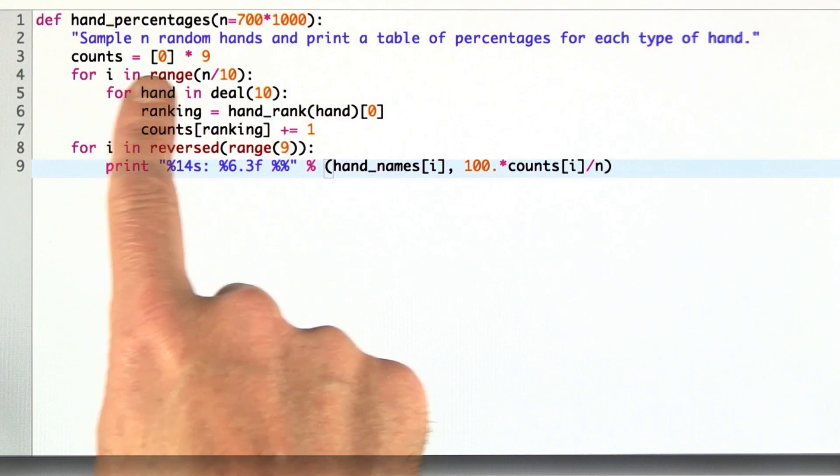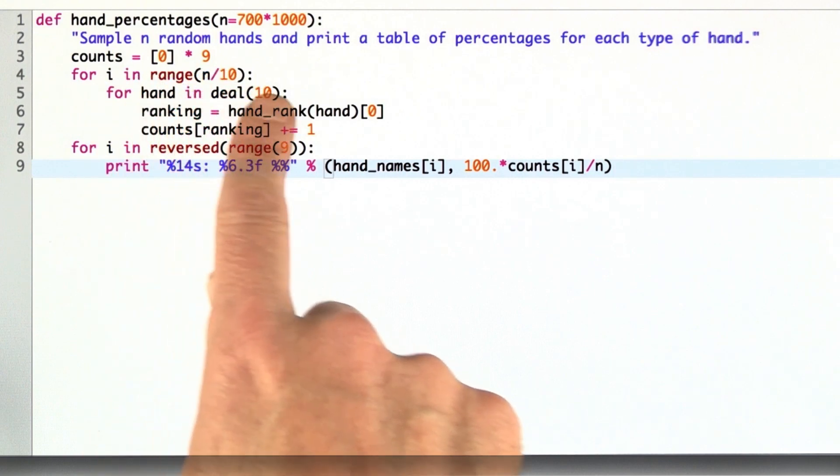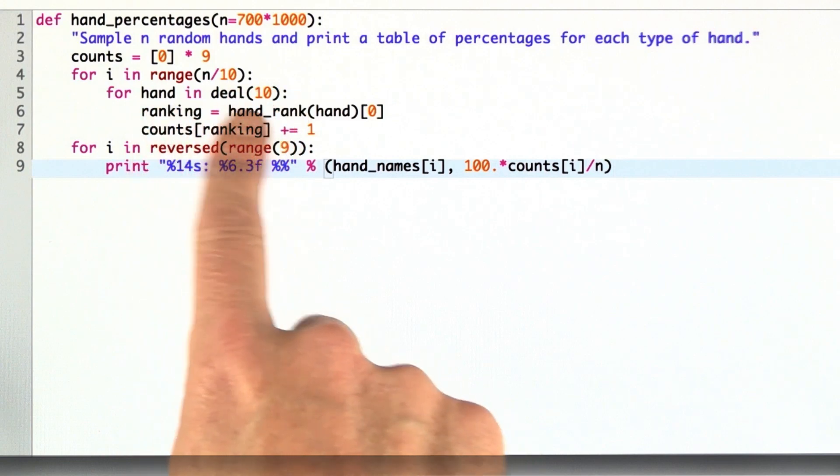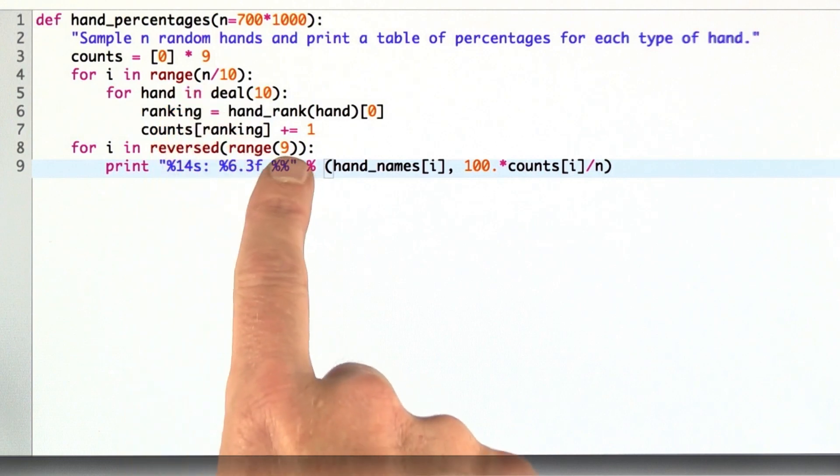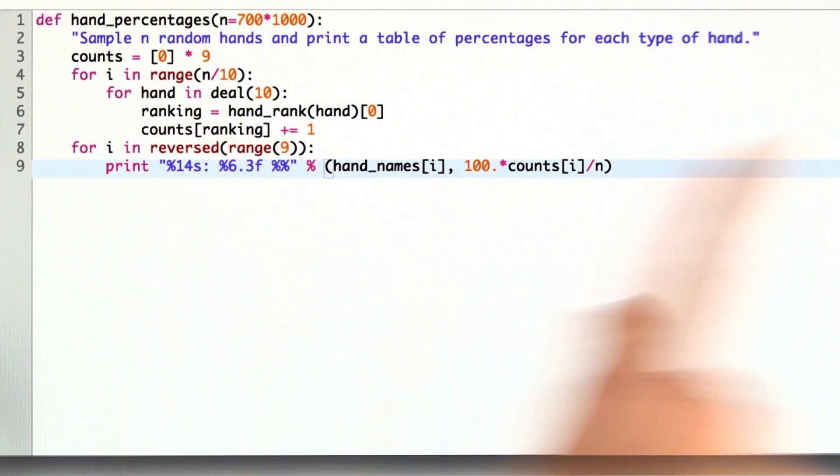We make up a vector of counts, which starts with no count for each of the nine possibilities, and then we go through the deals. What I'm going to do is deal 10 hands n over 10 times, and for each of those hands, I compute the ranking and then increment the count for the ranking, and then I just print out the results.